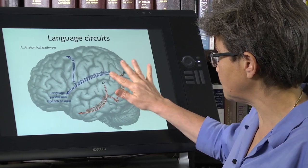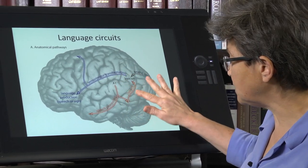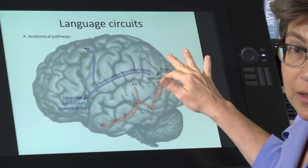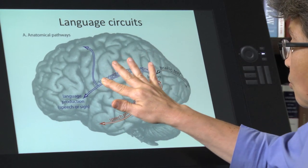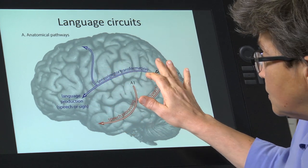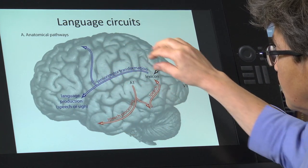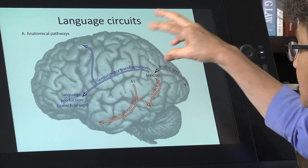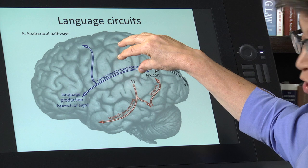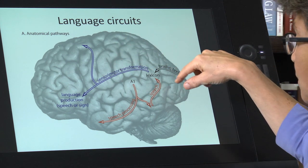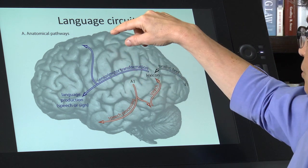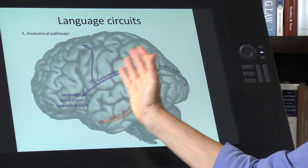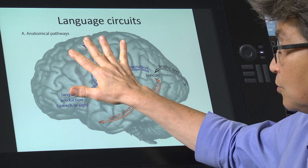So under normal circumstances, speech comes in, it's understood, and now there's a response. And the response is going to go this way. Remember that parietal, these are all sensory areas. The parietal lobe is going to have an association area where it's taking in visual information, auditory information, somatosensory information, and integrating that into something.